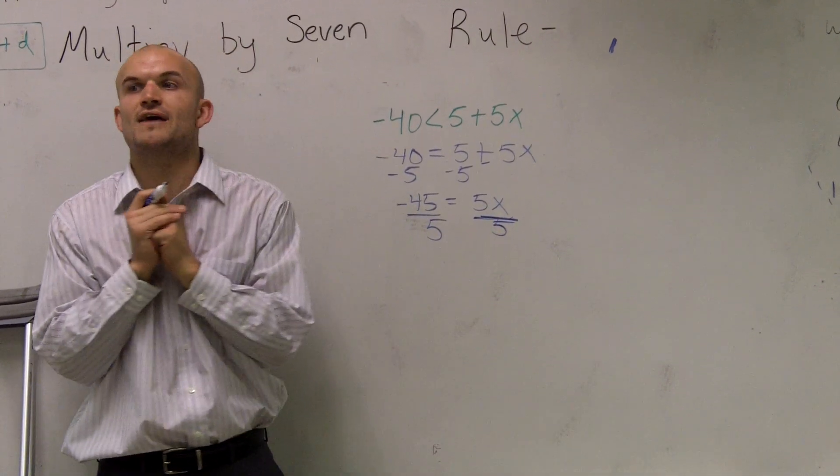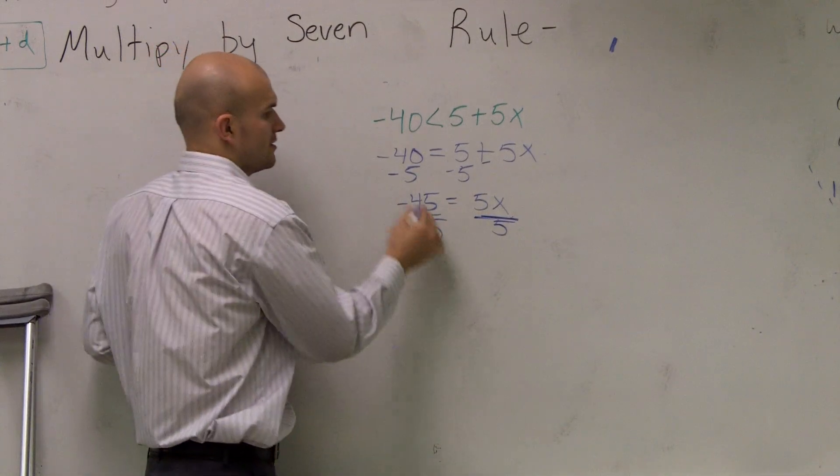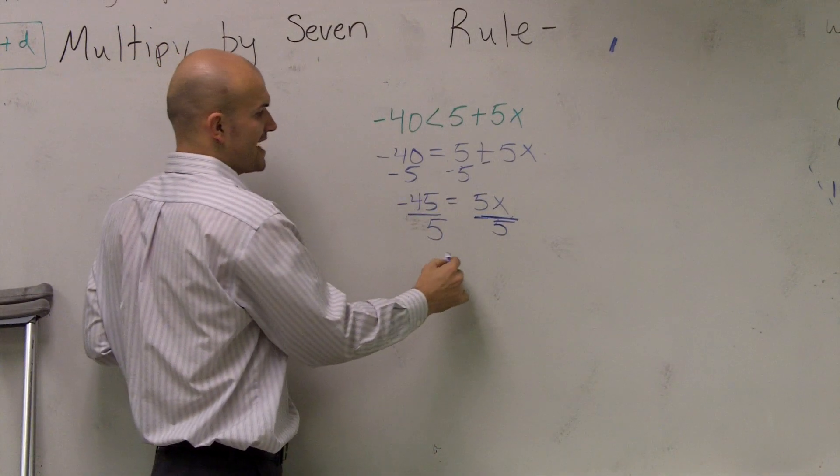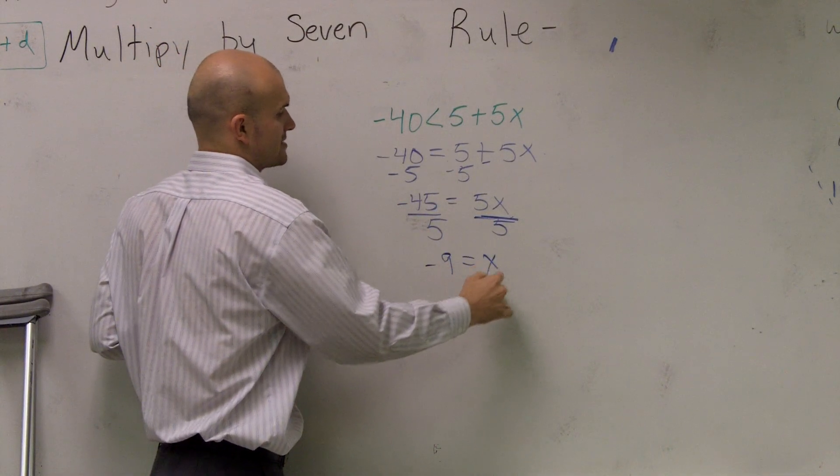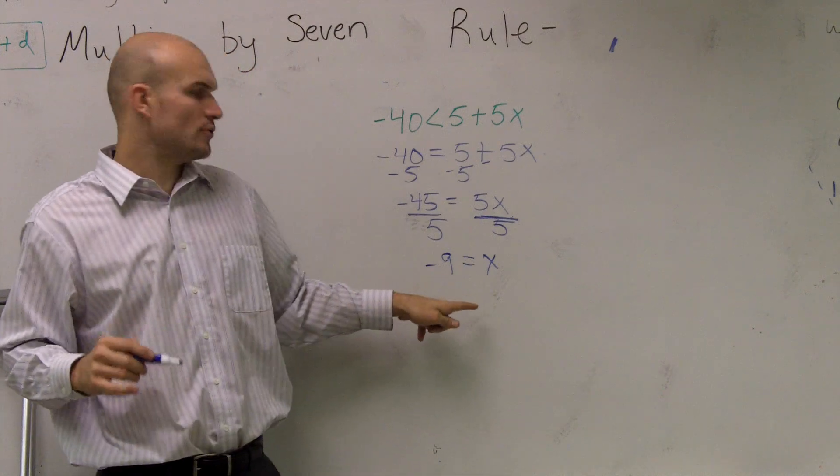So, therefore, I have -45 ÷ 5. -45 ÷ 5 is -9 = x. Now, what I do is, I put my inequality sign back in.